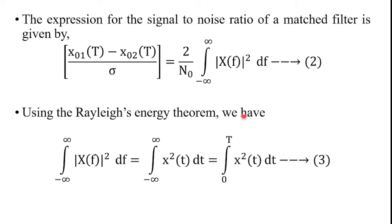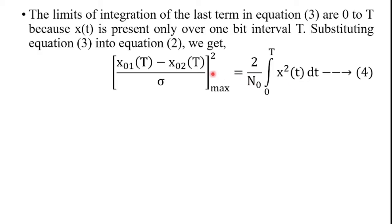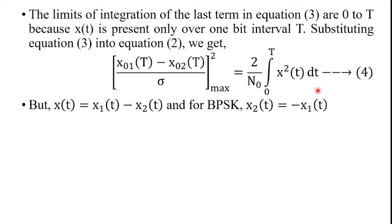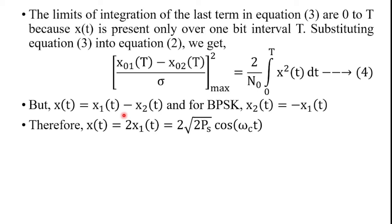Substituting equation 3 into equation 2, we get the signal-to-noise ratio of the matched filter as: [x01(t) − x02(t)] / σ² = (2/N0) ∫_0^T x²(t) dt. Now, x(t) = x1(t) − x2(t), and for binary phase shift keying, x2(t) = −x1(t). Substituting x2(t) = −x1(t), we get x(t) = 2x1(t).